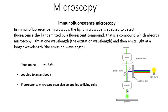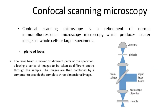The structures in the specimen to which the antibody has bound can then be visualized. Fluorescence Microscopy can also be applied to living cells, which allows the movement of the cells and structures within them to be followed over time. What is Confocal Scanning Microscopy?